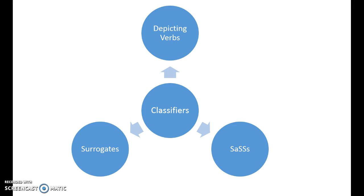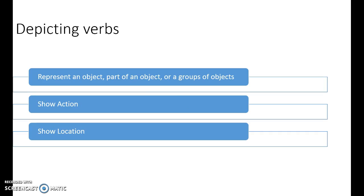But now linguists have said, you know, I think there are some better ways to classify these. So instead of thinking of classifiers as one group, let's think about the three different things that classifiers really might be examples of. The first are depicting verbs.